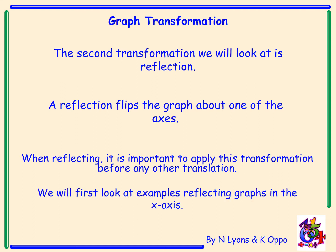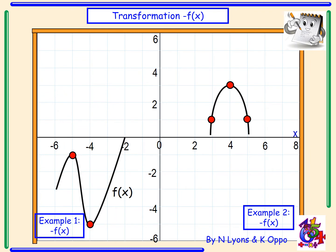We will first look at examples reflecting graphs in the x-axis. So the transformation we're going to look at is negative f(x) and if we look at example one we have the graph of f(x). Now as the negative is outside the bracket this is going to reflect over our x-axis.